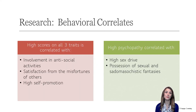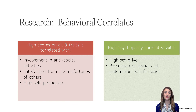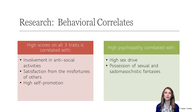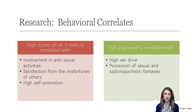We've identified some of the behaviors associated with the Dark Triad dimensions. People who score high on all three dimensions tend to be involved in antisocial activities, enjoy the suffering of others, and are not afraid to promote themselves in social situations. People who score high on the psychopathology dimension also tend to have high sex drives and possess fantasies of a sexual and sadomasochistic nature. In this lecture, we covered four different trait approaches to personality. Next week, we will turn our attention to the humanistic approaches to personality.